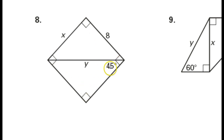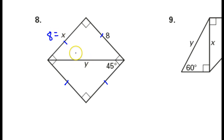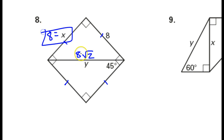This is 45 degrees, so we have isosceles — this is a square. So if this is 8, then this is going to be 8, and this should be 8 radical 2. So x is 8 and y is 8 radical 2.